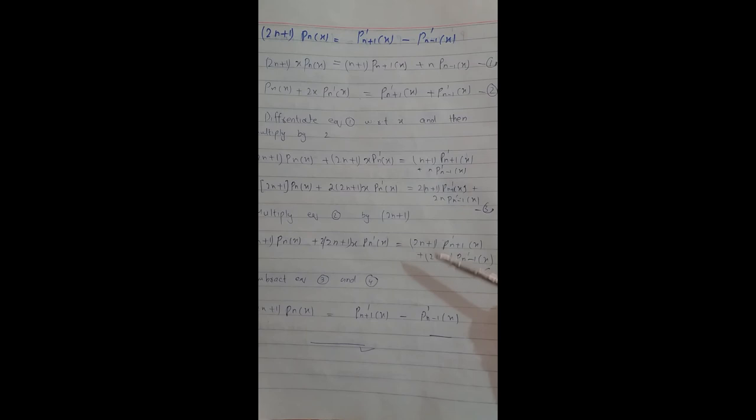We name this equation 3. Then Equation 2 is multiplied by (2n+1) to get equation 4. Subtracting equation 3 from equation 4, we get: (2n+1)·Pn(x) is equal to P'n₊₁(x) minus P'n₋₁(x). Hence proved.